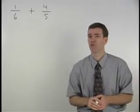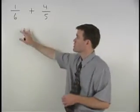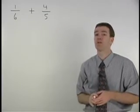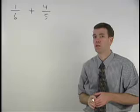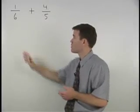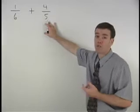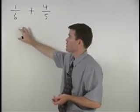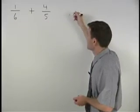To add these two fractions together, one-sixth plus four-fifths, we need a common denominator. The common denominator is simply the least common multiple for the two denominators. So here our first step is to find the least common multiple for six and five.